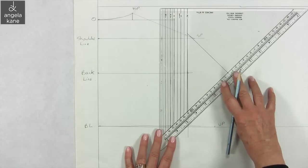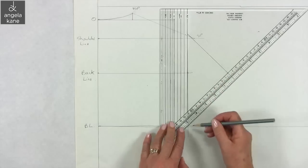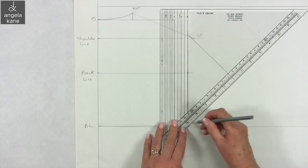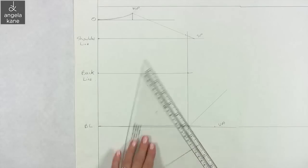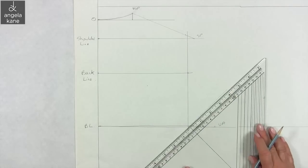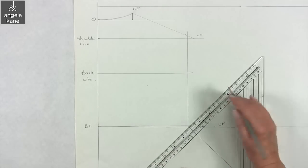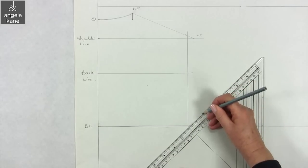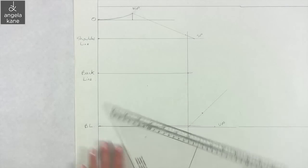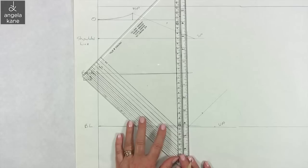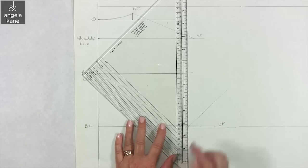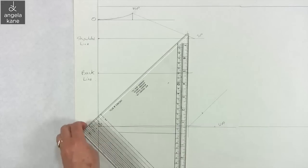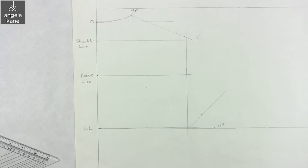At the angle on the bust line draw a 45 degree guideline and mark a point one and a quarter inches to one and a half inches along it. You can adjust this later if you need a more roomy armhole. We are going to draw the armhole curve keeping it pretty flat at this point passing through the back line.